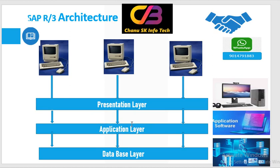The application layer is essentially software. After processing, the data moves directly to the database layer, where the information will be stored. The user provides inputs, the system processes those inputs, and the data moves to the database where it is stored. It then sends the information back to the application layer and again to the presentation layer so the user can access the details on screen.